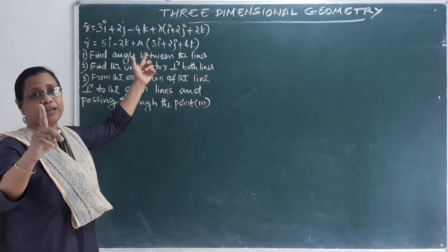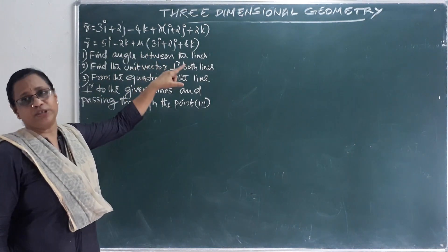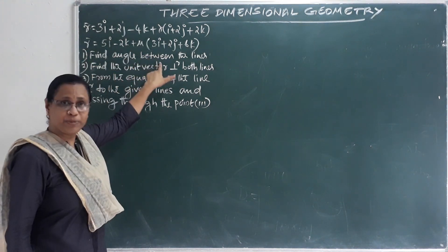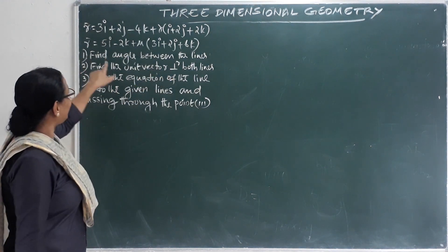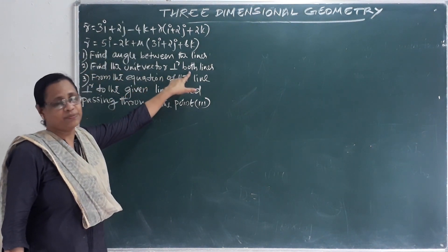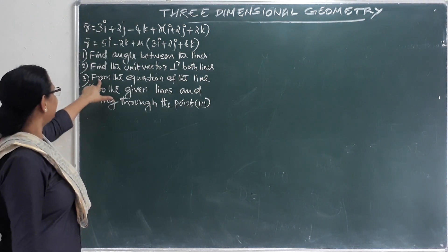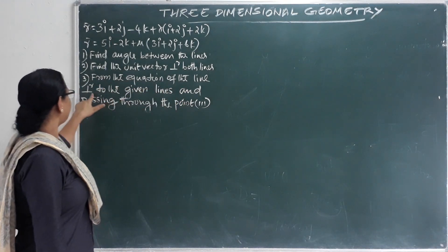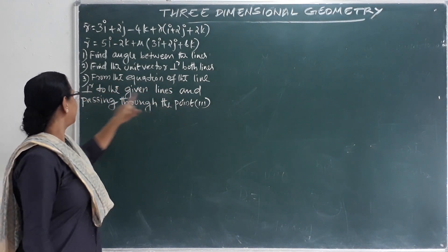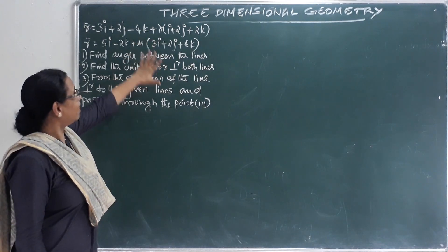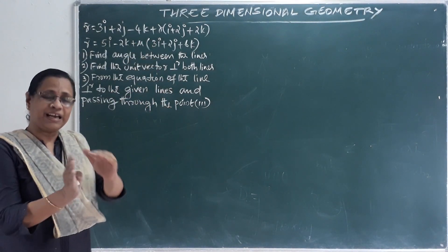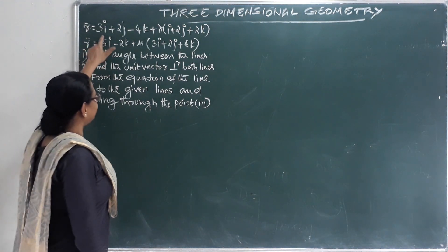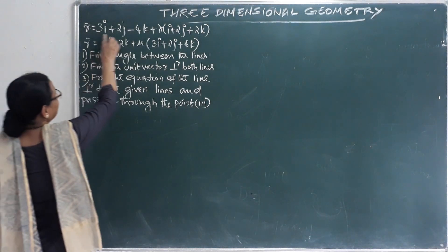The questions we need to cover in this section are: first, convert the vector equation into Cartesian form; second, find the angle between the lines; third, find the unit vector perpendicular to both lines; and fourth, find the equation of the line perpendicular to the given lines and passing through a given point.